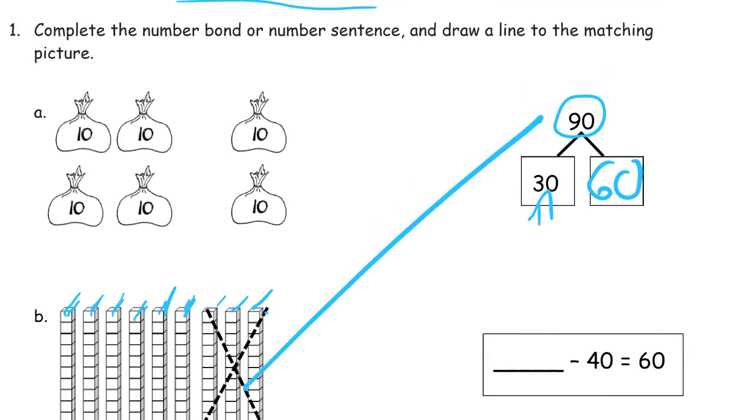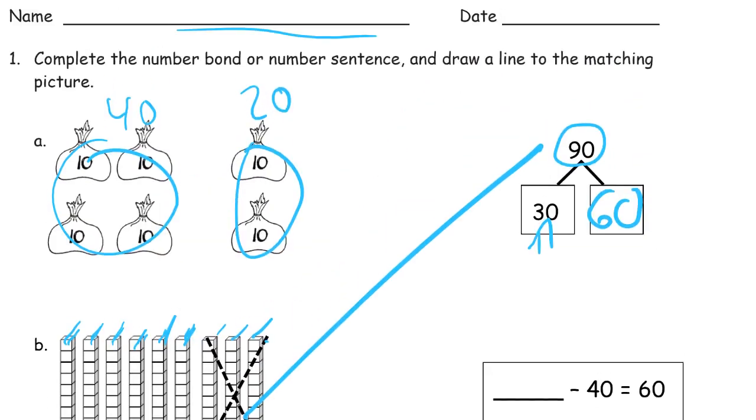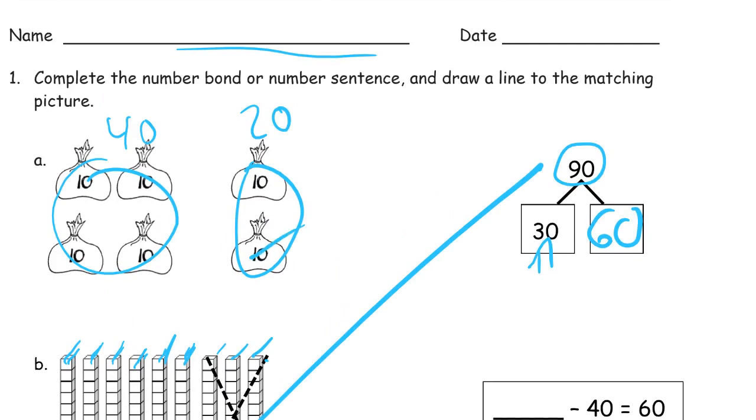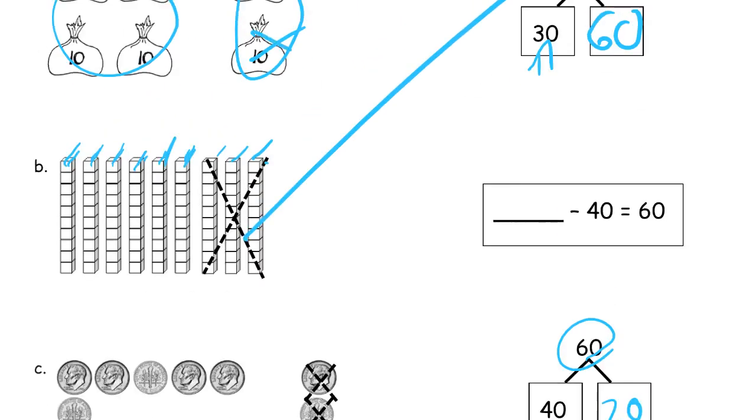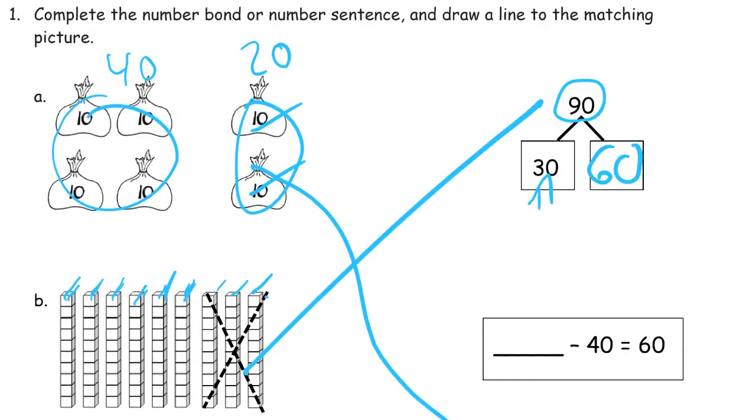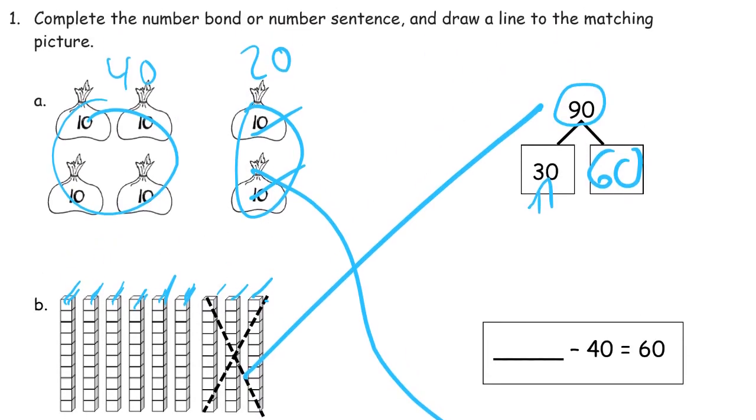And this one here has, what do we have? Four groups of 10, so that's 40. And this is two groups of 10, that's 20. So it looks like we have parts of 40 and 20. And let's see, it's going to add up to all of this together is 40, 50, 60. The whole is going to be 60. Whatever they are, bags of something.